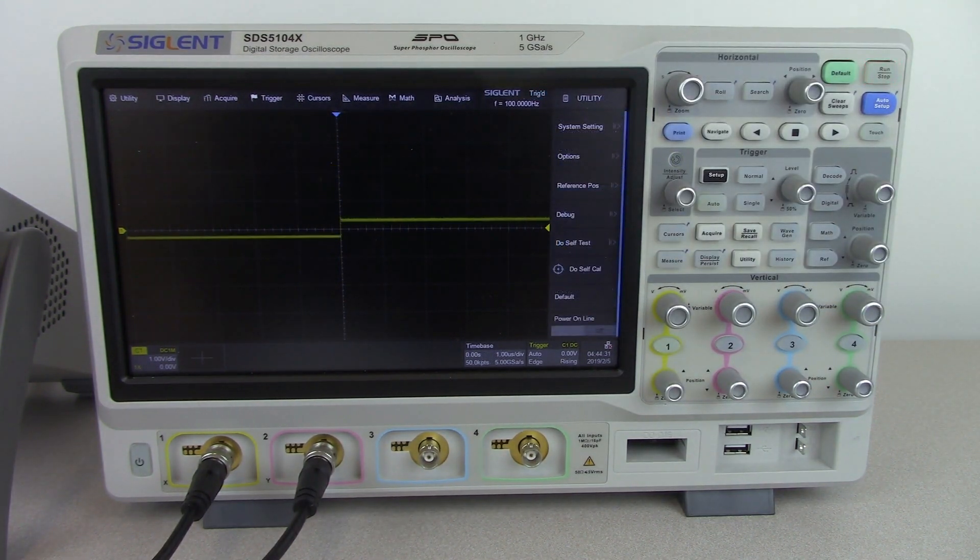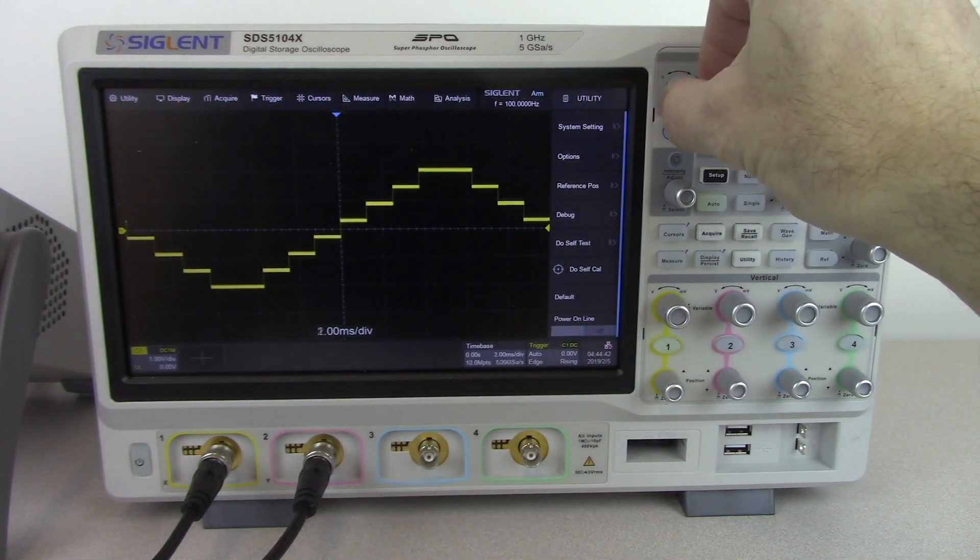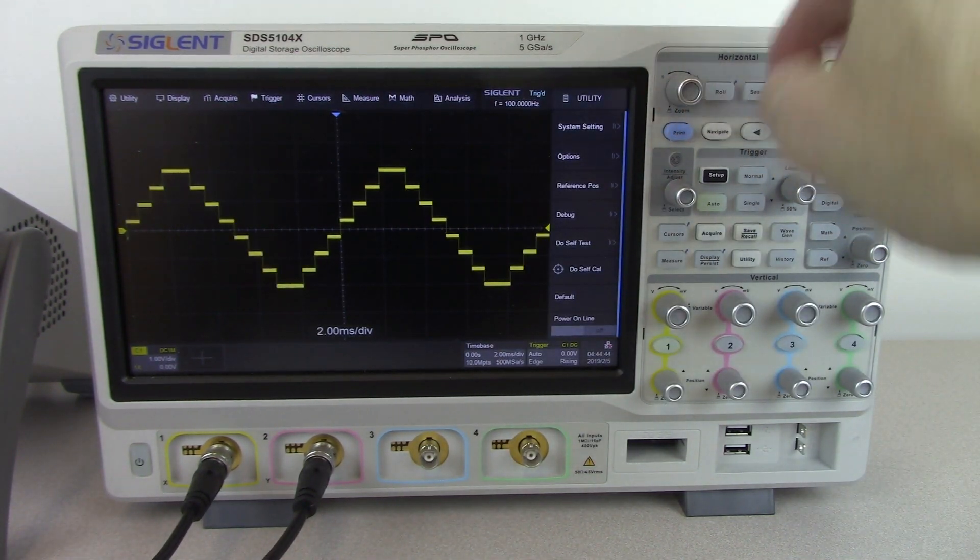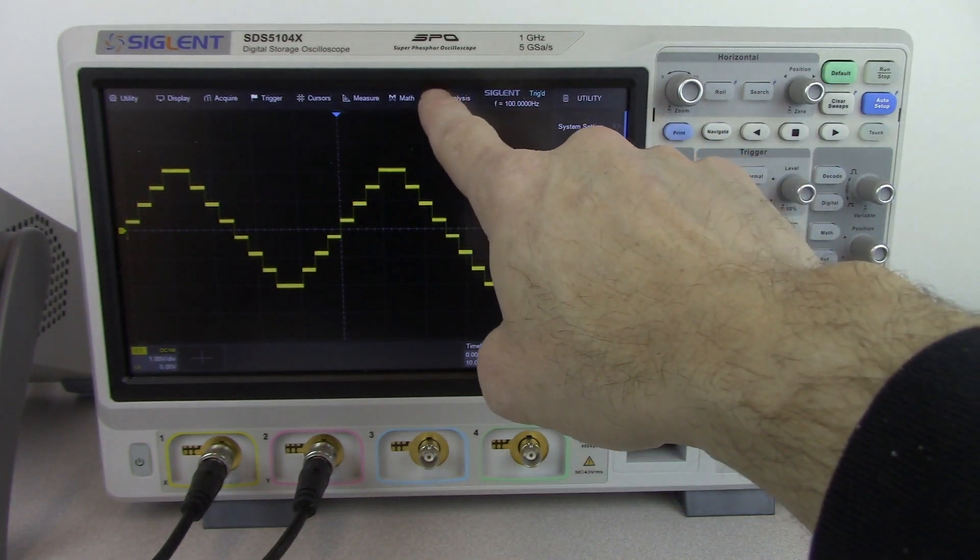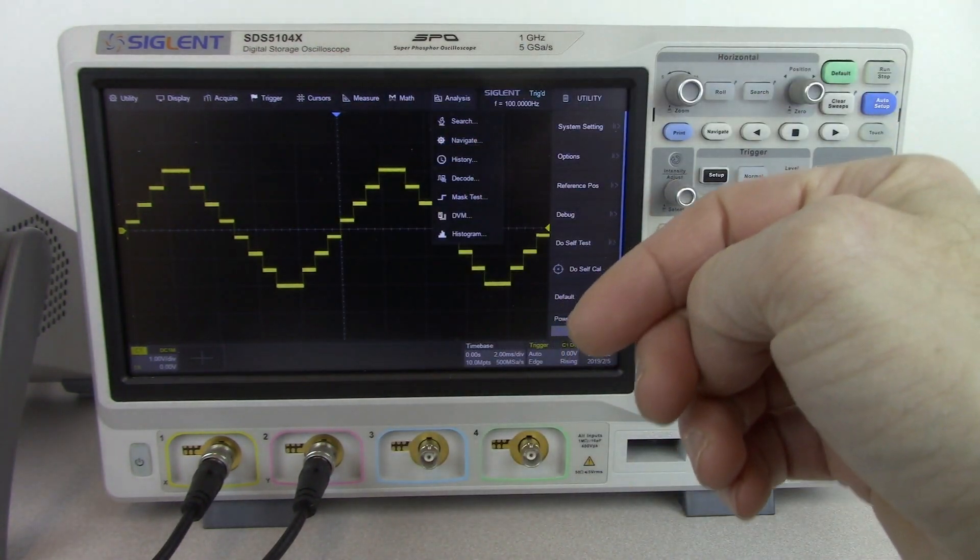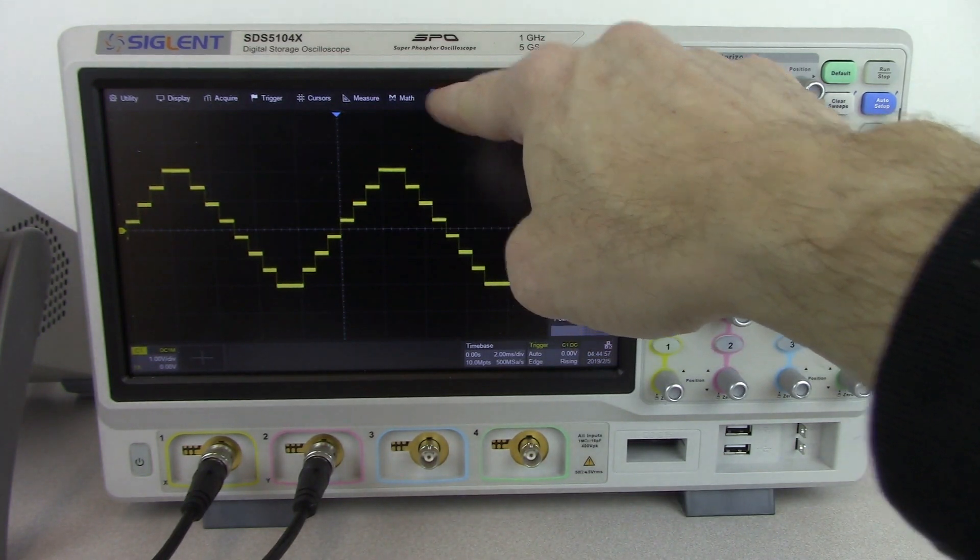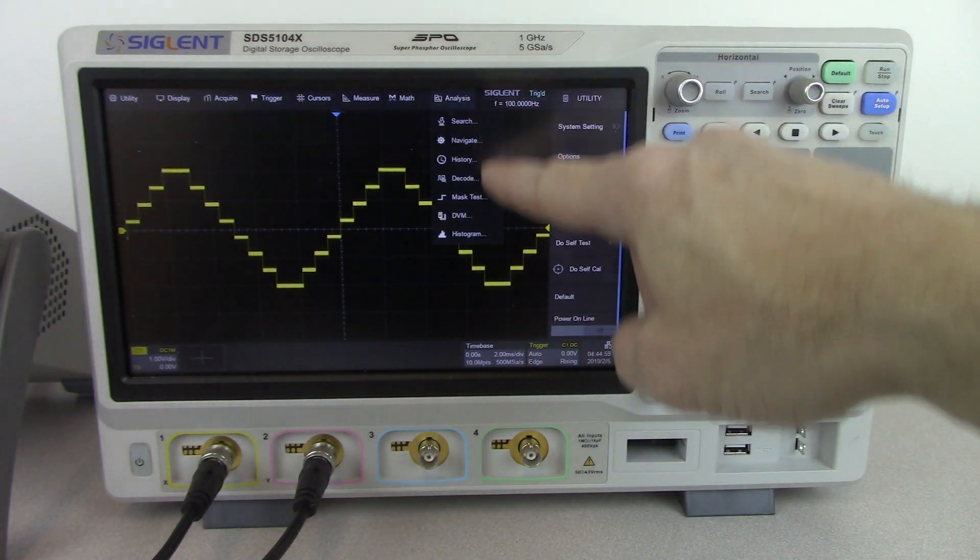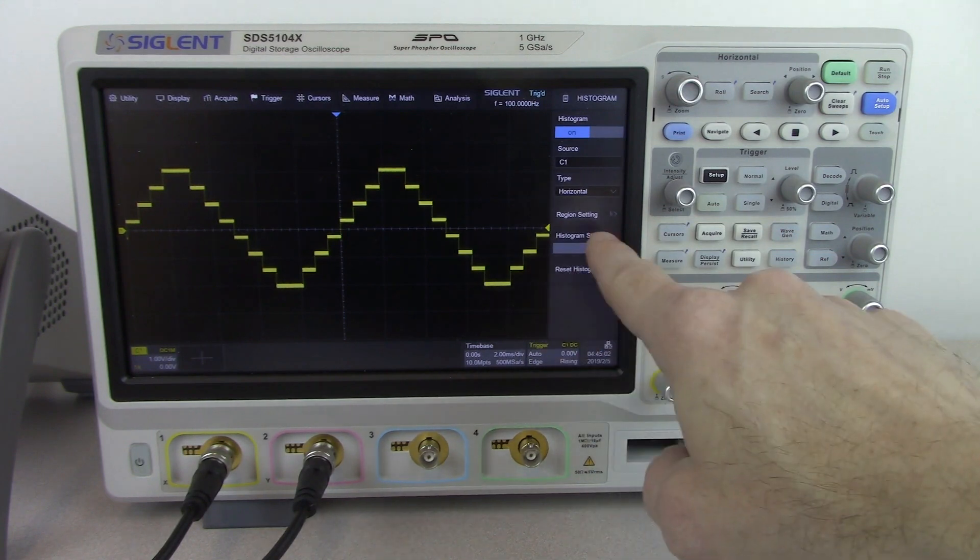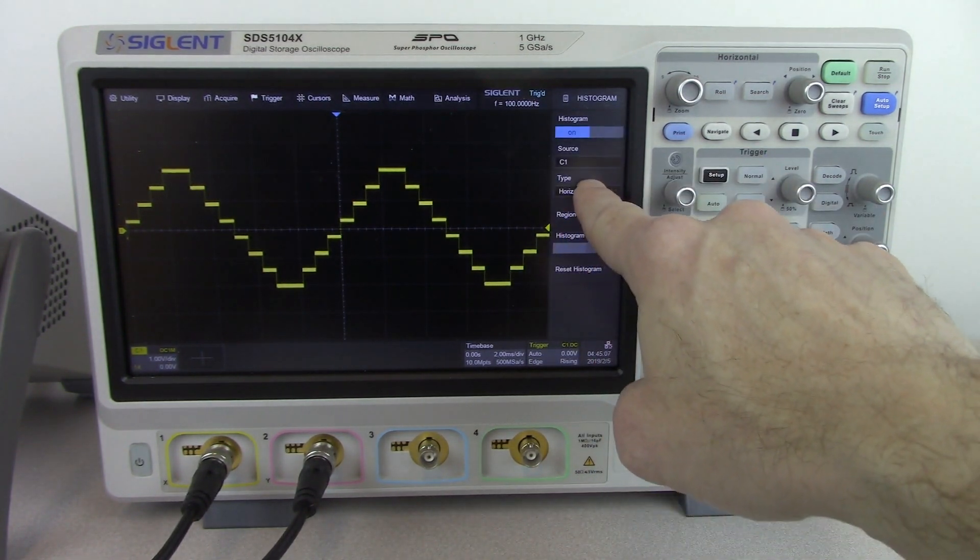Now I would like to introduce the waveform histogram function of the SDS5000. In this case, I've got a stair step output here using the signal generator. To enable waveform histogram, which is going to give you an analysis of the bins that have been hit or the pixels that have been occupied by a particular waveform or series of waveforms, we want to press analysis to open up that menu. We're going to go to histogram. I'm going to set this to vertical because it's more interesting.